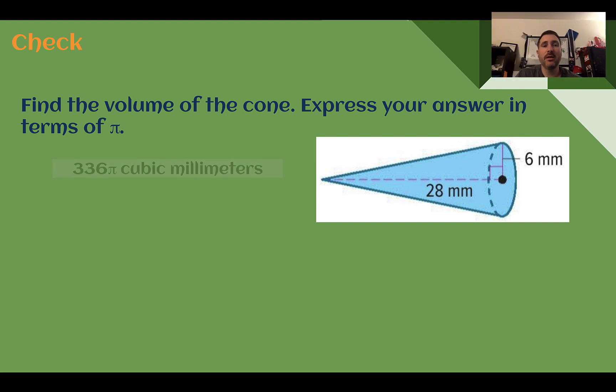Check your answer. You should have said 336 pi cubic millimeters, or you could have wrote mm to the third power. Volume is equal to pi times r squared times height, and instead of one-third I'm just going to say divided by three. So r squared, 6 squared is 36, times the height 28, and then still divided by three.